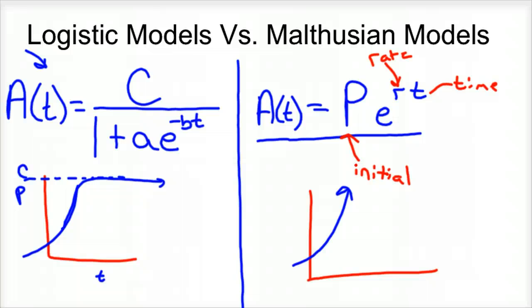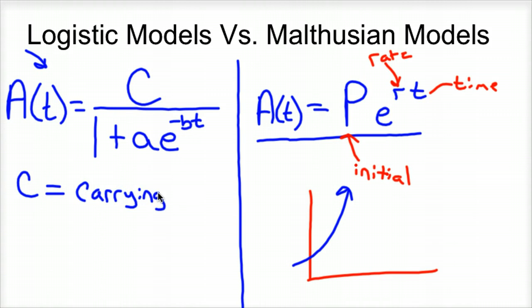So let's kind of break this thing down and show you what everything means, and then I'll give you an example. So first off, C, as I said before, is that carrying capacity. C is carrying capacity. So the most, that's the cap on our population. We're not going to be able to go above that.